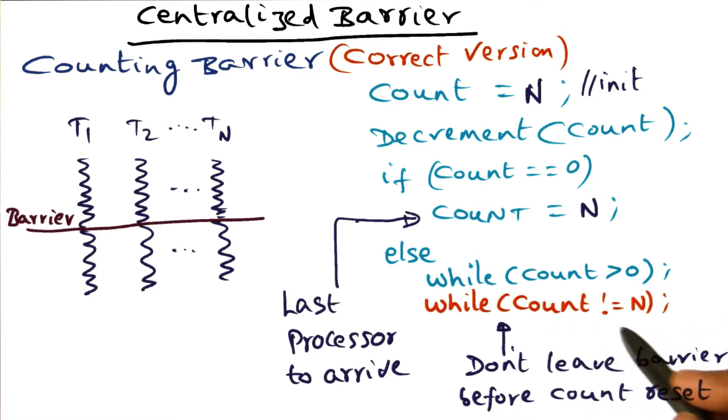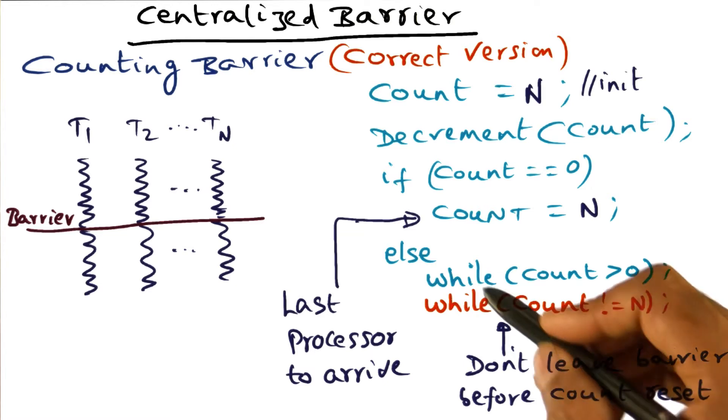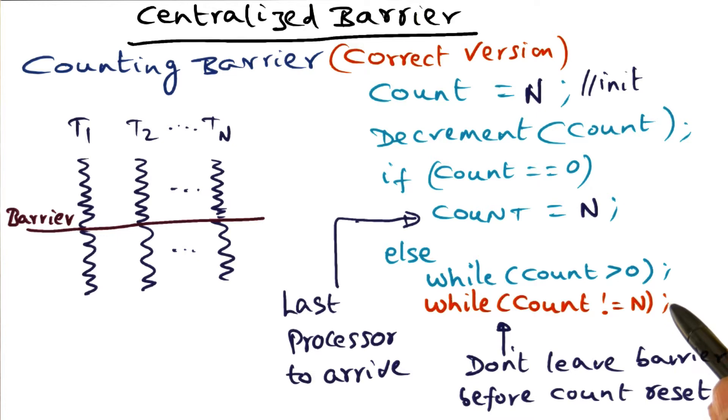What we're going to do is add another spin loop here. After they recognize that the count has become zero, they're going to wait till the count is n yet. This ordering of these two statements is very important obviously.